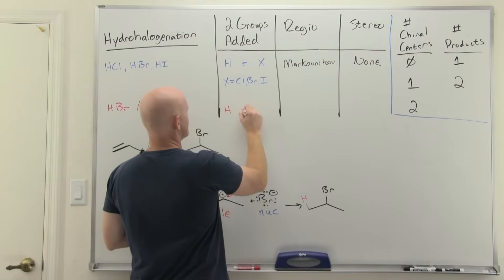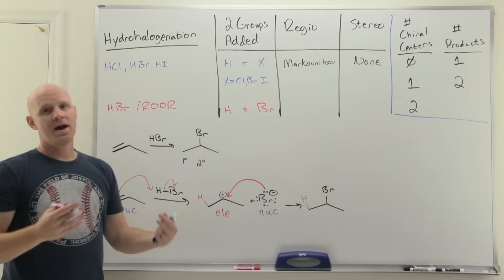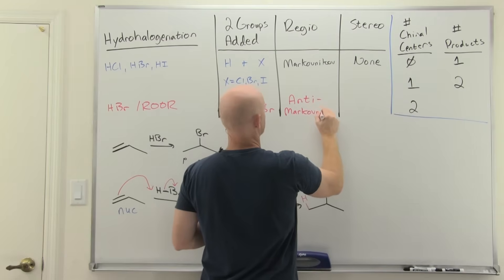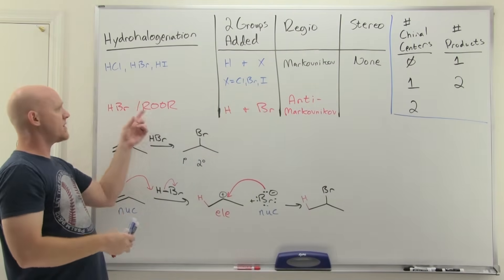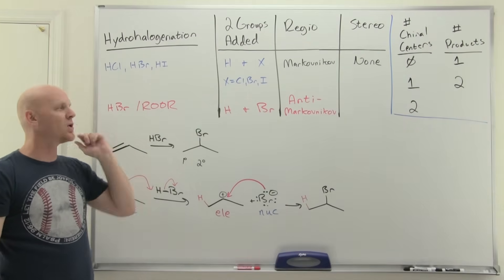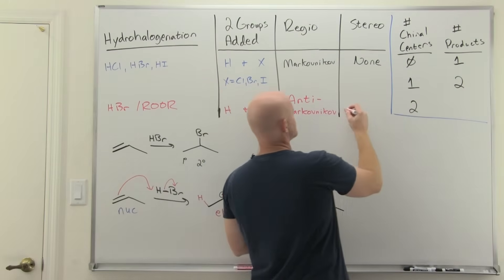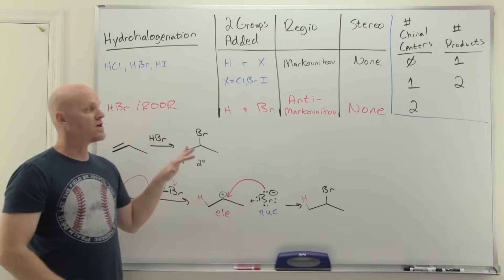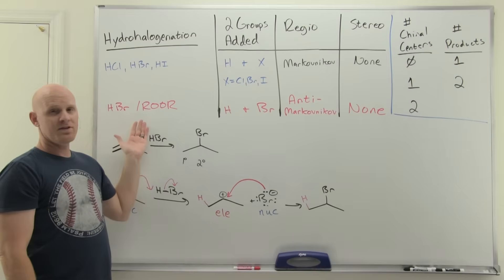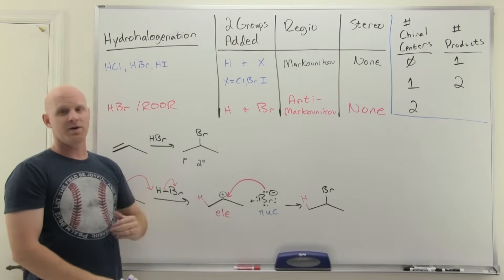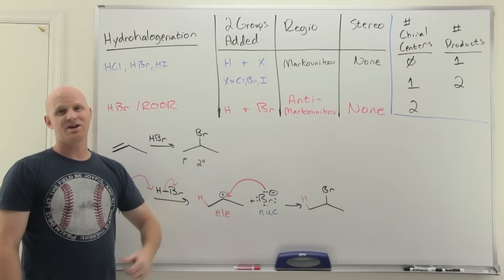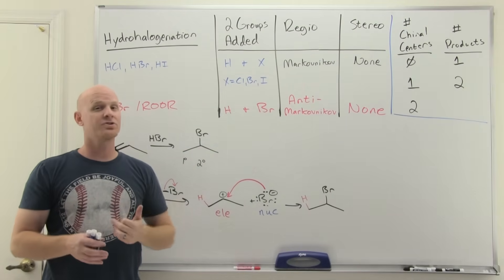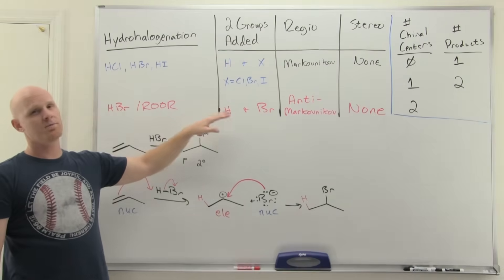With HBr and a peroxide, you still add an H and a bromine, but it does not go Markovnikov — it goes anti-Markovnikov. A memory trick: the ROOR 'roar' scares HBr into going anti-Markovnikov. There is also no stereoselectivity in this reaction. The mechanism is not covered here yet — it goes through radical intermediates, not a carbocation, so it's a totally different mechanism covered in the radical chapter. It goes anti-Markovnikov not by violating chemistry rules, but simply because it's a different pathway.